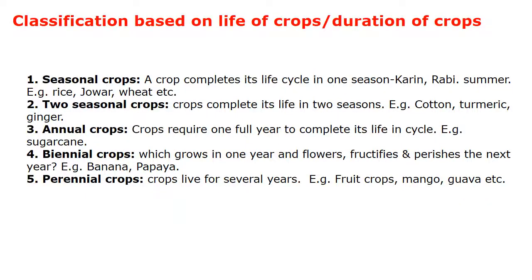Another classification is based on the life or duration of the crop. Seasonal crops complete their life cycle in one season — they may be classified as Kharif, Rabi, or Summer crops, such as Rice, Jowar, Beet, etc. They take only a single season to complete their life cycle.